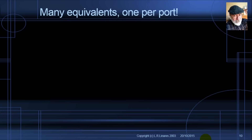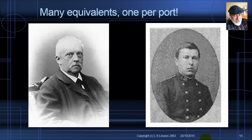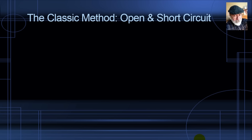Now, back to our regular programming. Helmholtz and Thevenin said: given a linear network and a port, we can represent that network at that port by one voltage source in series with one resistor — one equivalent per port. The task at hand is to find the value of that source and that resistor: V_TH and R_TH, the Thevenin voltage and the Thevenin resistance.